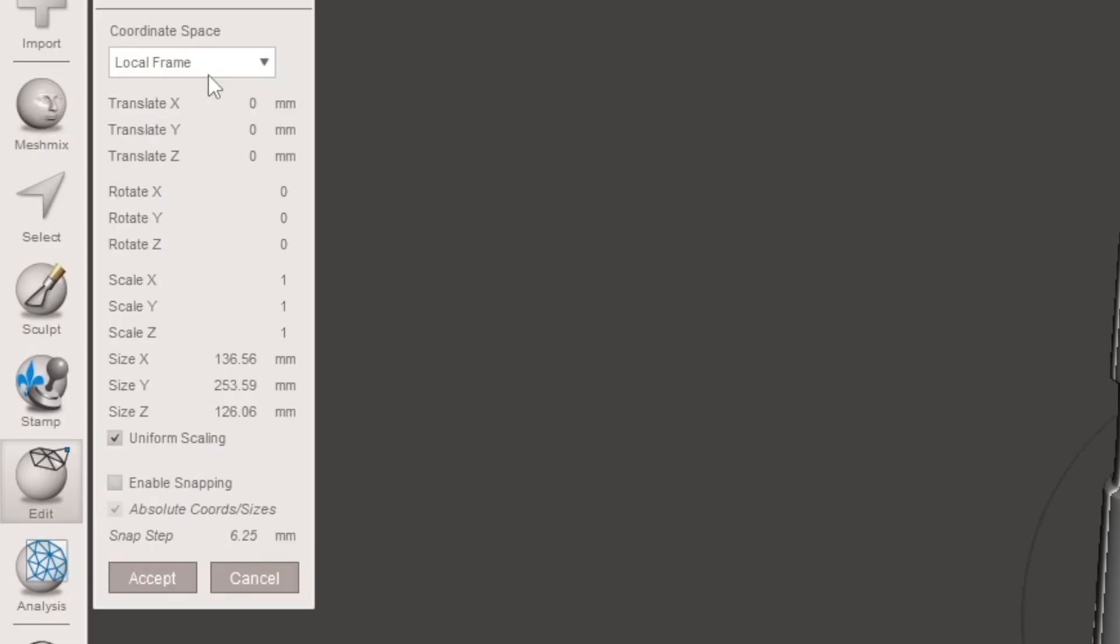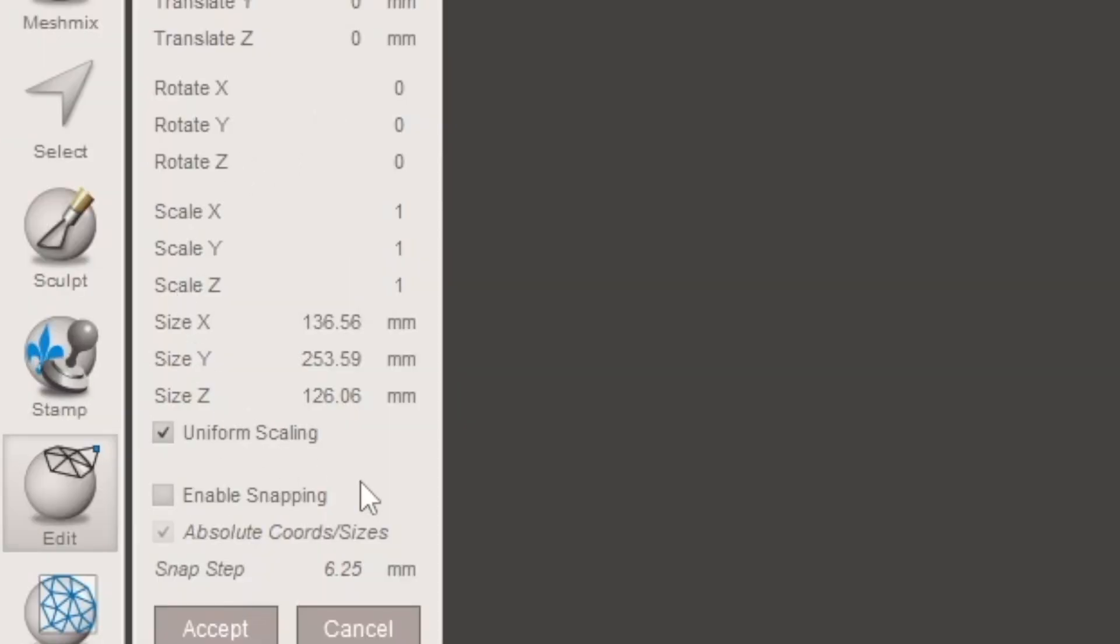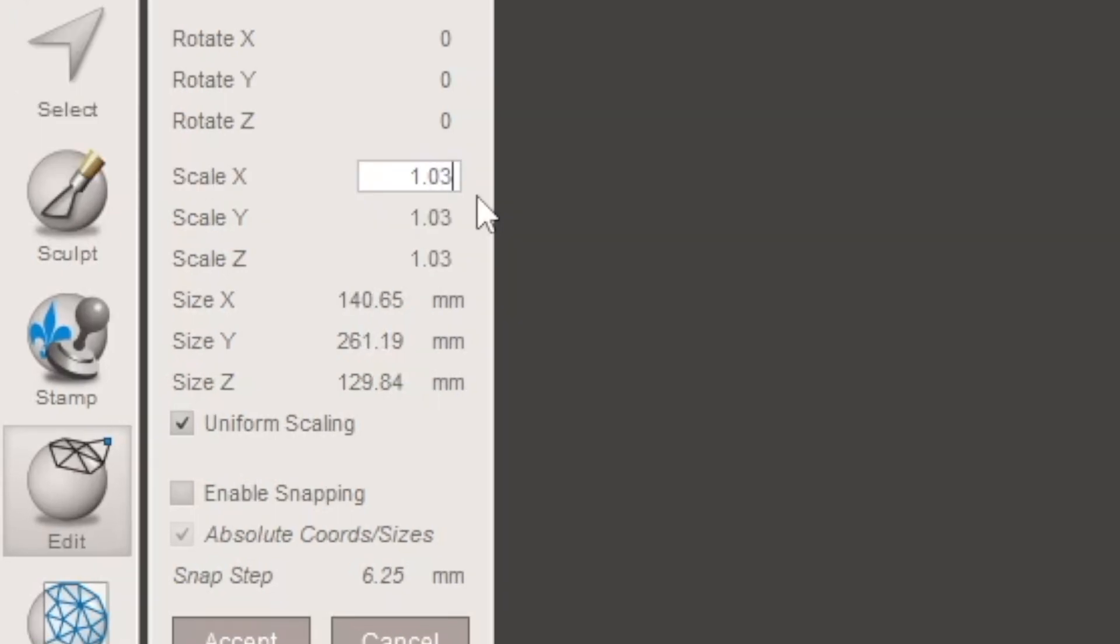All you need to do to rescale is click on the number one next to whichever axis you're looking to scale and you're going to go up or down by decimal points in order to rescale it. So for example let's say I needed to scale this x-axis up a bit to give the wrist some more wiggle room. I would then select 1.03 to give me 103 percent scale.